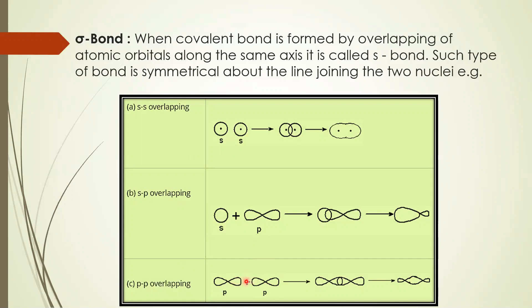Even in P-P overlapping, it is on the same axis and head-to-head overlapping takes place. So sigma bond can be formed by overlapping of S-S orbitals. When these orbitals overlap, they have almost the same energy level — minimum difference in energy — so they are able to overlap and give rise to a molecule. P orbitals are dumbbell-shaped whereas S orbitals are spherical in shape, and P-P overlapping also forms sigma bonds.